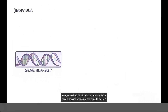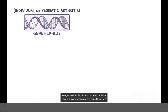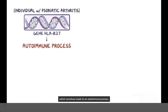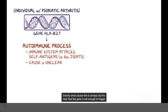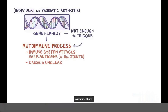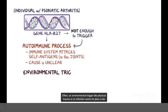Many individuals with psoriatic arthritis have a specific version of the gene HLA-B27, which somehow leads to an autoimmune process. In these individuals, the immune system attacks self-antigens, specifically ones in the joints. Exactly what causes this is unclear, but it's clear that the gene itself is not enough to trigger psoriatic arthritis. Often, an environmental trigger, like physical trauma or an infection, seems to play a role as well.